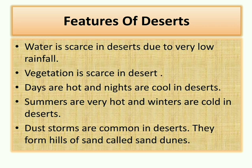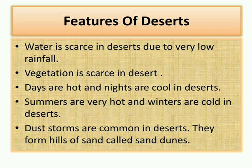Dust storms are common in deserts. When wind blows very fast, it blows away sand particles, and this is called a dust storm. When the speed of the wind decreases, the sand particles are deposited, forming hills of sand called sand dunes, which are very common in deserts.